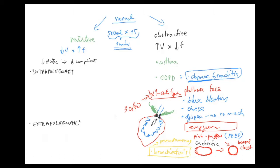The intrapulmonary group can be divided into causes that are to a certain point reversible, and another group that is rather irreversible or even progressing. The irreversible cases are chronic diseases which make the lungs less and less compliant — more stiff over time.